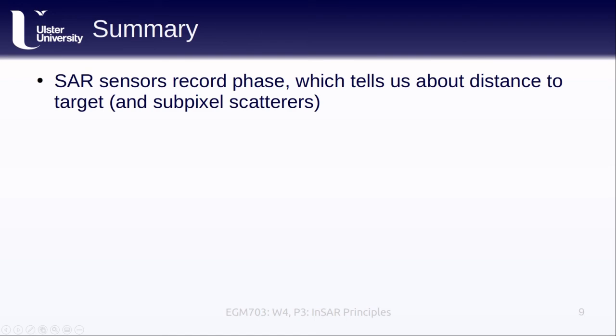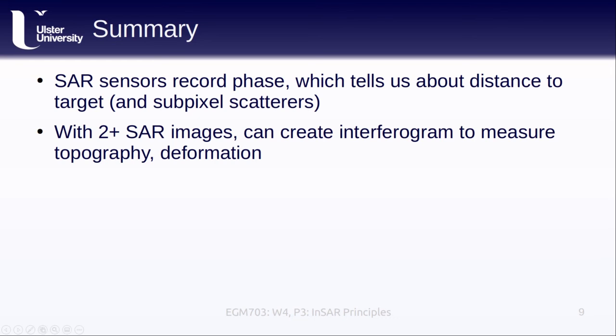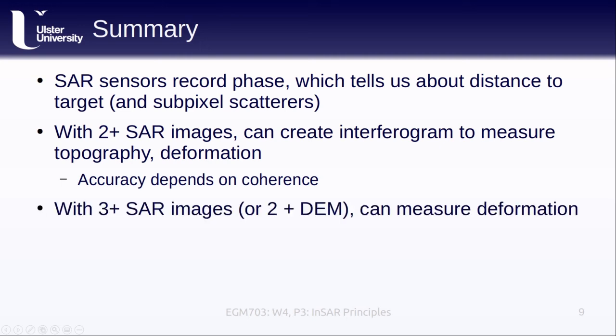So, in this lesson, we've covered how SAR sensors record phase, which contains information about the distance to the target and the subpixel scatterers. If we have at least two SAR images, we can create an interferogram to measure topography and deformation, though the accuracy of this technique depends on the level of coherence between the two images. With three or more SAR images, or two images plus an external DEM, we can subtract the topographic phase from our interferogram and measure the deformation or surface displacement between the two images. In short, InSAR is a powerful technique that can provide highly accurate measurements of topography and motion, though like all things, it is not without its limitations.